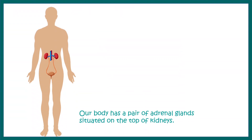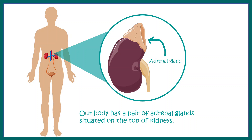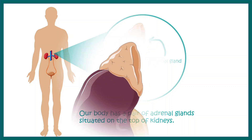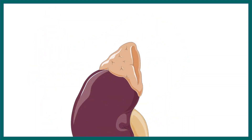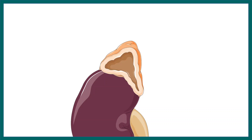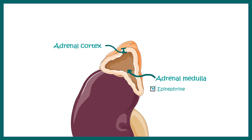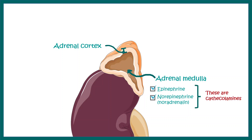Our body has a pair of adrenal glands which are situated on top of the kidneys. The adrenal gland is a small gland. If we cut a cross section we get two portions: one is the adrenal cortex and another is the adrenal medulla. The adrenal cortex secretes several hormones, as does the adrenal medulla. Adrenal medulla secretes epinephrine and norepinephrine, all of which are known as catecholamines.